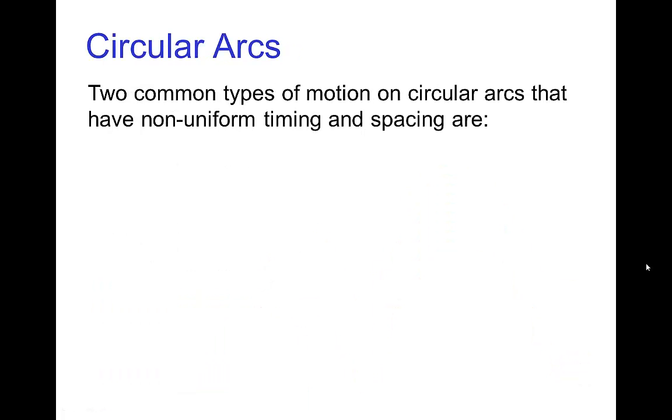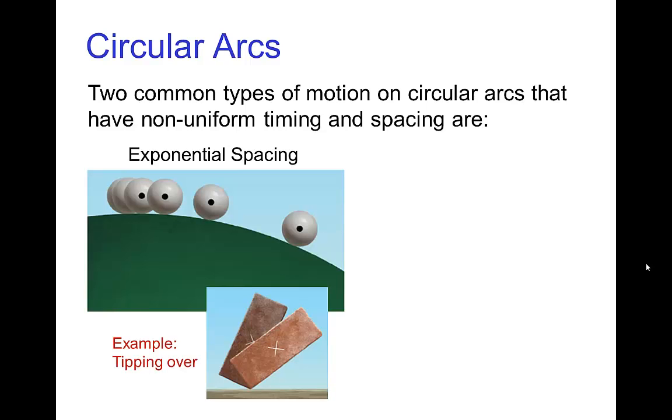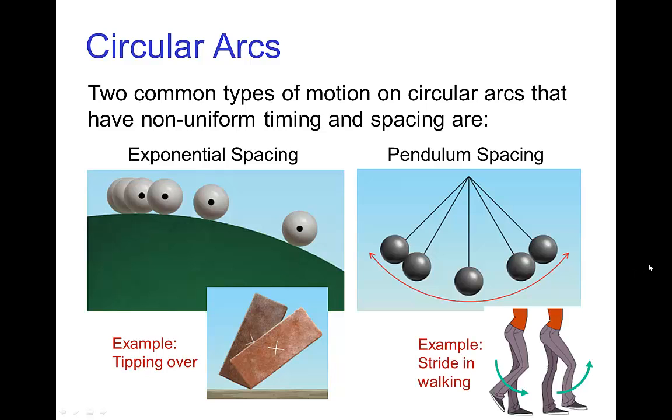Another common type of path of action is a circular arc, and we have various kinds of timing and spacing for a circular arc. We have the example when something is tipping over—that has a certain timing and spacing. And when something is swinging like a pendulum swinging on a pivot, this has a different kind of timing and spacing that we'll talk about in another tutorial.